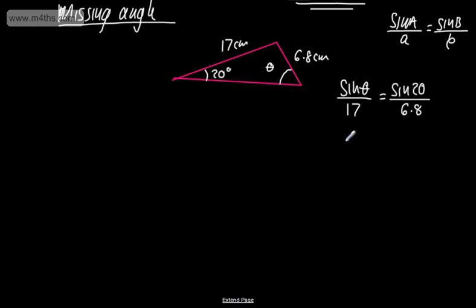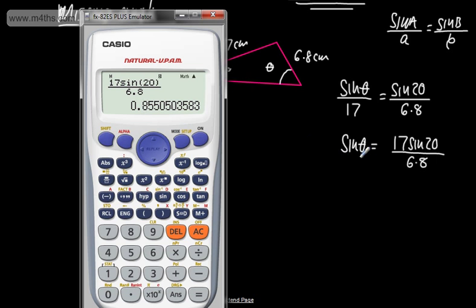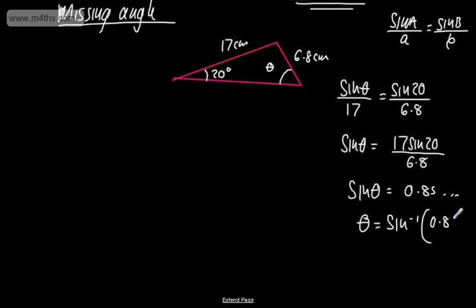At this stage I can get an expression for sine theta. Multiplying both sides by 17, sine theta equals 17 sine of 20 divided by 6.8. Putting this in the calculator gives sine theta equals 0.855. That isn't the size of the angle — sine theta equals 0.855. We saw in the last video that we need to take the inverse sine of this quantity to find the angle.